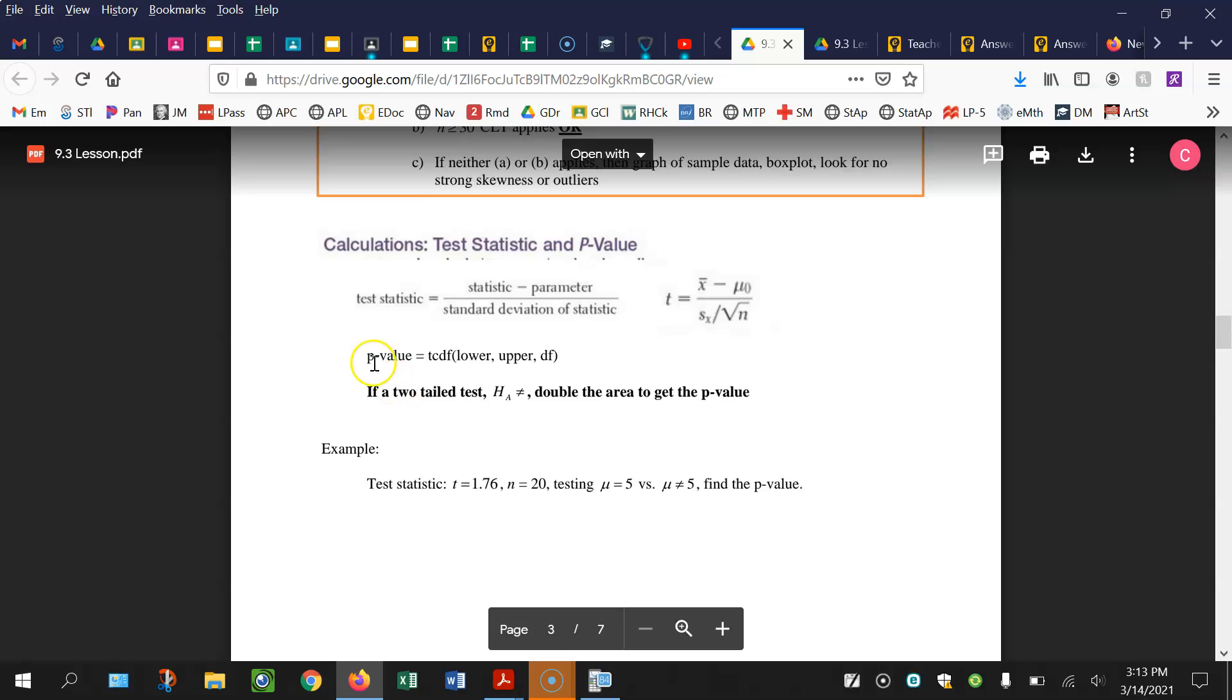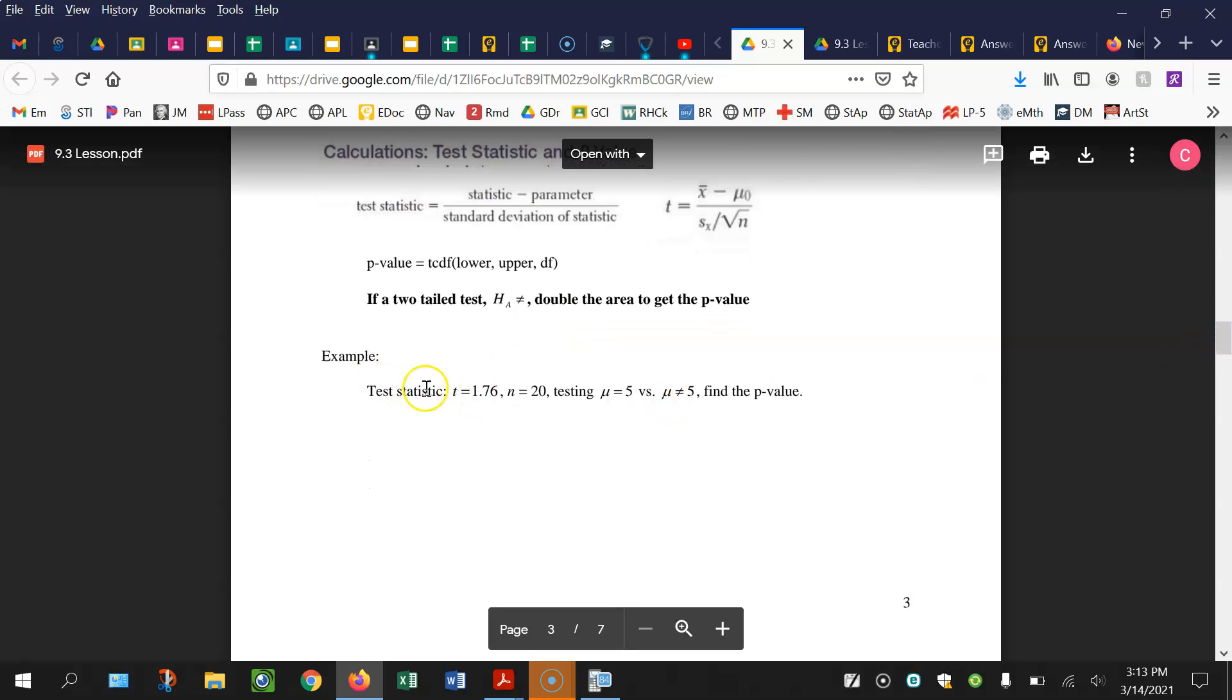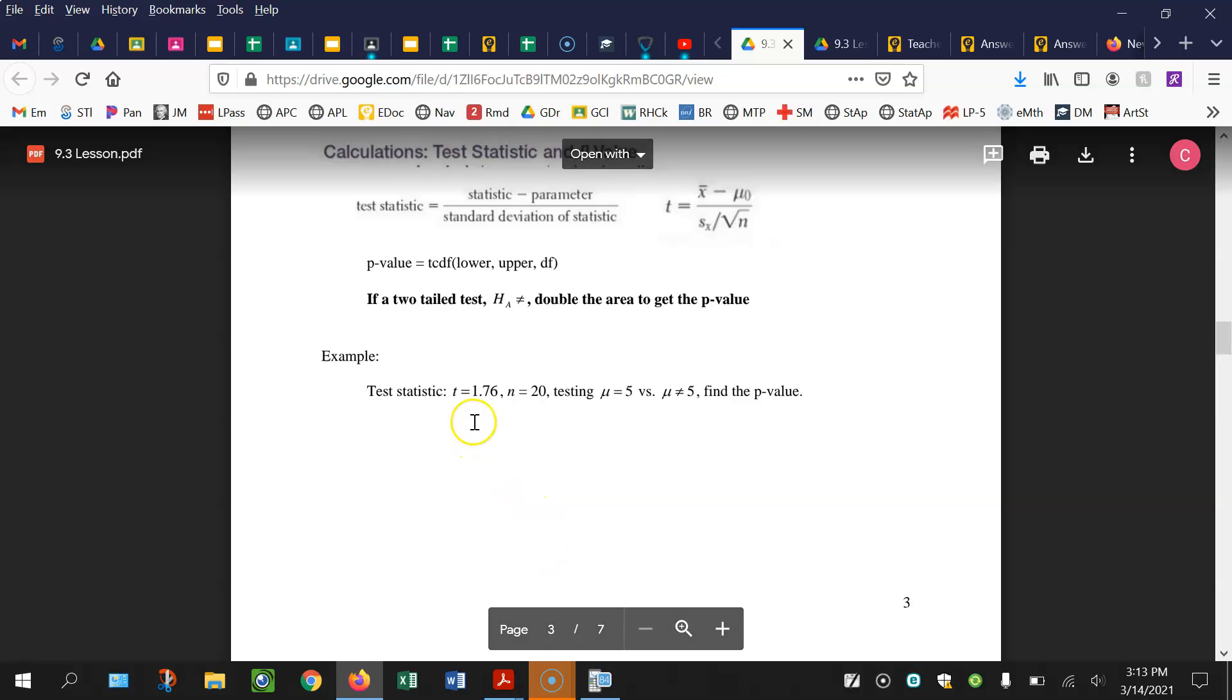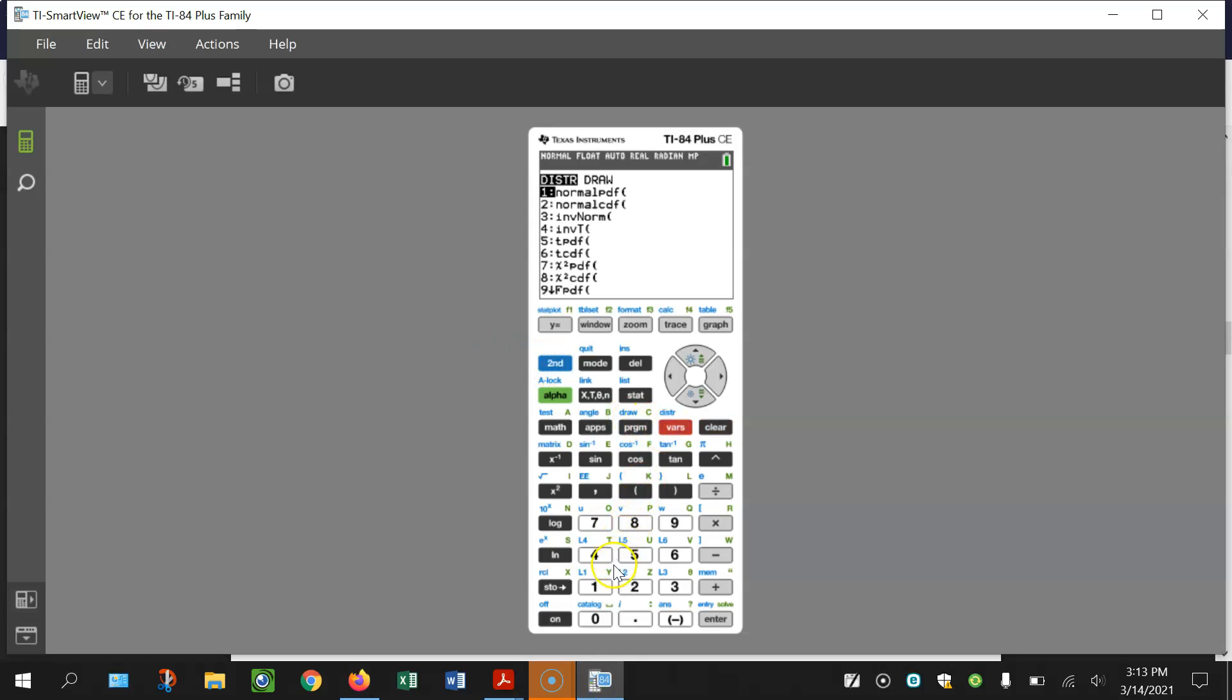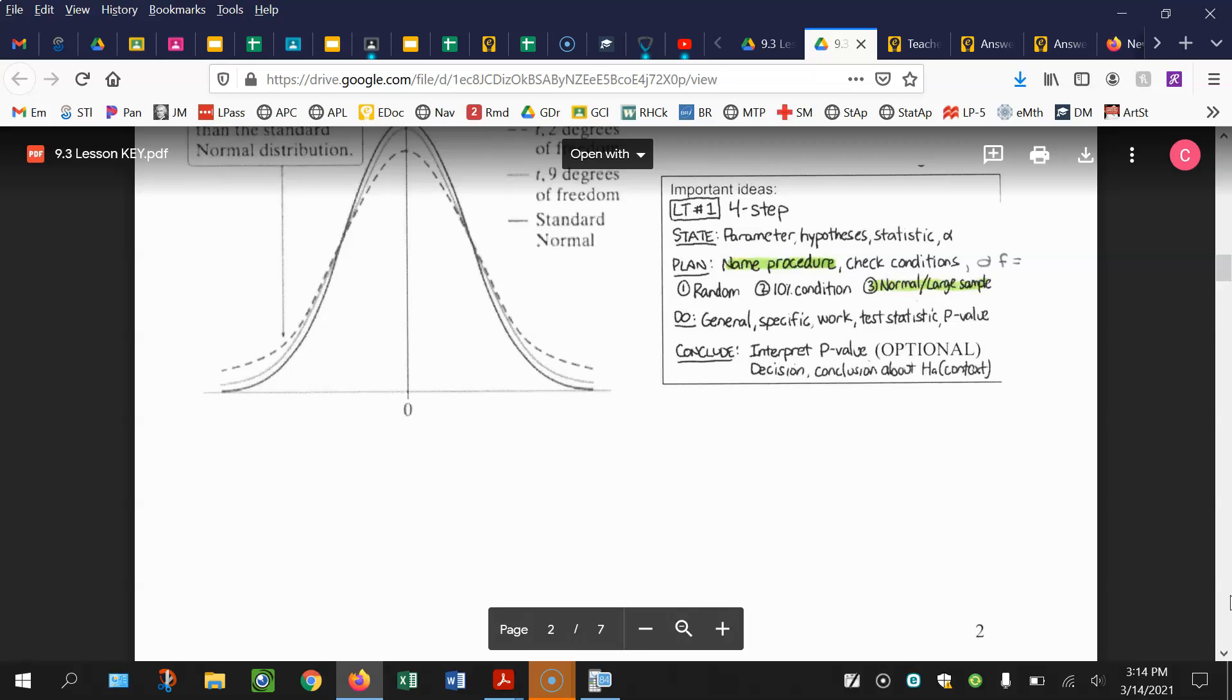Test statistic, we kind of went through that. To get the p-value you're using TCDF, how to do it if it's a two-tailed test. What I'd like you to do is find the p-value given the information they've given you. I immediately recognize this is a two-tailed test. The sample size is 20, so there's 19 degrees of freedom, and the test statistic is 1.76. I'm going to go to TCDF and type in 1.76 to a very large number, degrees of freedom 20 minus 1 is 19, and then multiply this by 2 to get my p-value. My p-value here is going to be 0.094.